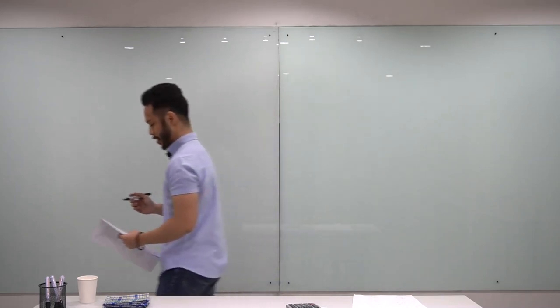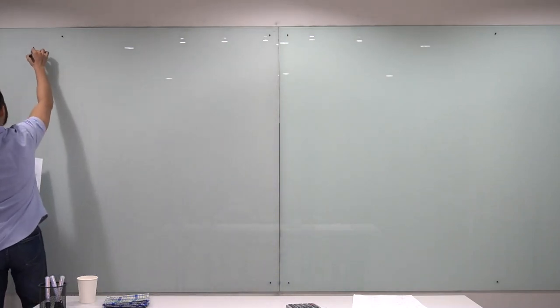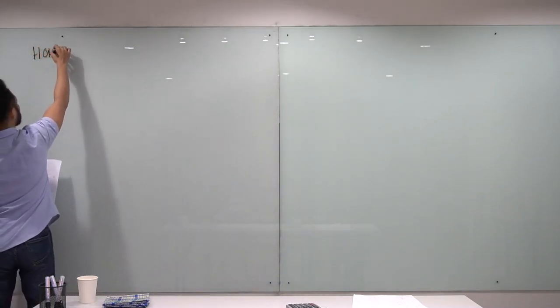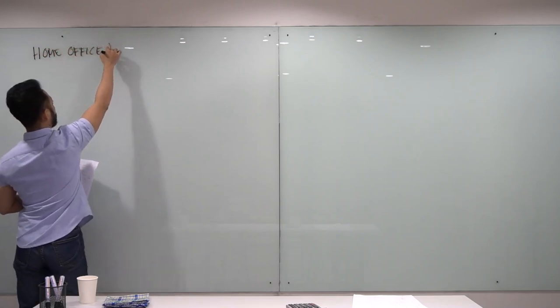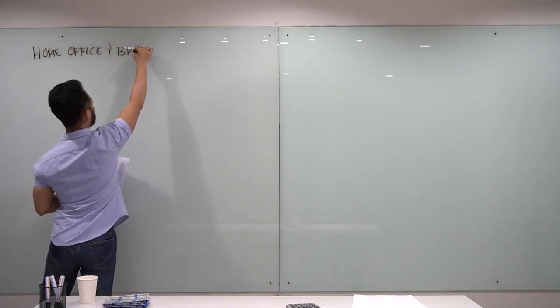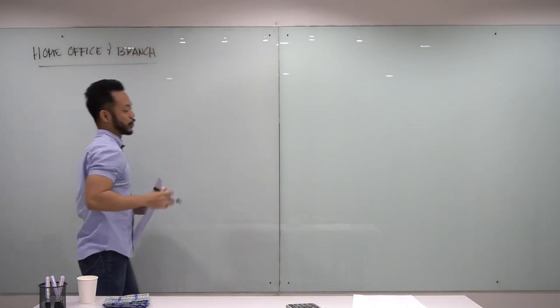Hello class! We're down to our last topic for the first free boards for AFAR. Today we will discuss one of the most confusing and challenging topics for accounting students. Our topic for today is accounting for home office and branch. So many students really struggle with this topic, but I'll try my best to simplify this topic for you.